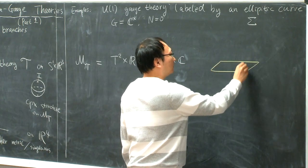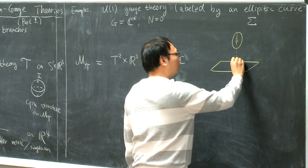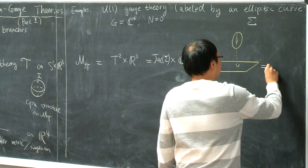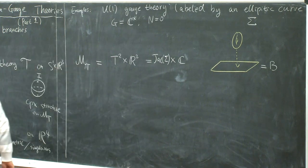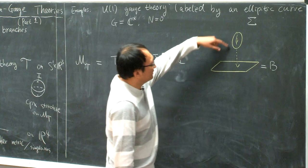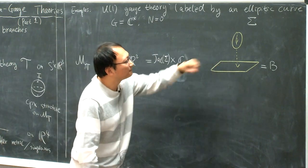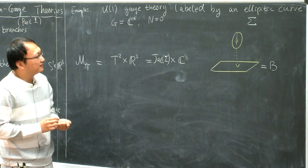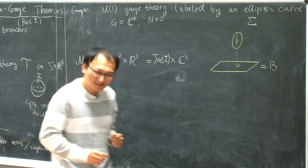It's easy to guess that the second factor will become a copy of the complex plane. But for the first one, it turns out that in order to specify the complex structure, you need some additional data. So the U(1) gauge theory is not just specified by the gauge group and matter representation — it's in fact labeled by an elliptic curve. I will use sigma for this elliptic curve, and the first factor will be identified with the Jacobian of this elliptic curve.